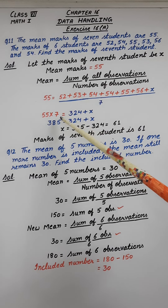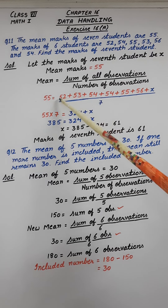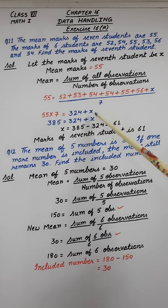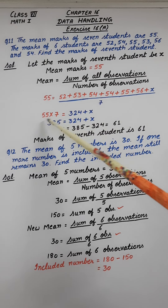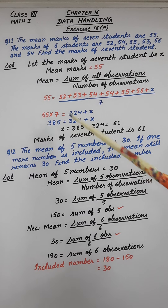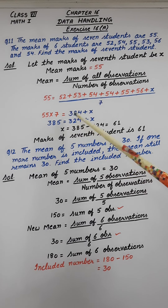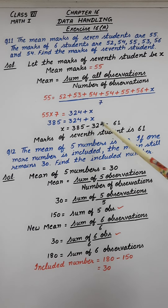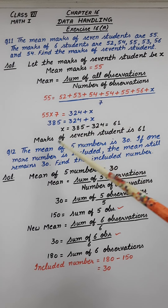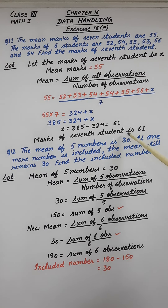On transposing, it will be 55 into 7 equals adding all these 6 observations, 324 plus x. On multiplication, 385 equals 324 plus x. Transposing again, 385 minus 324 gives you 61. So the marks of that 7th student is 61.